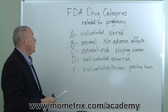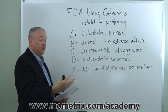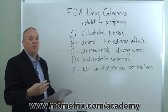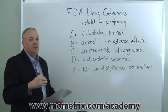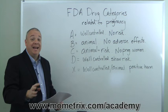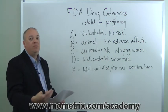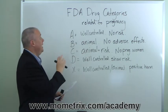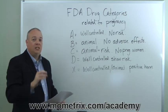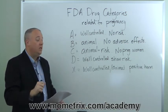We'll begin with Category A. These are drugs that have well-controlled studies on pregnant women, and those studies show no risk — no possible elevation of risk — during any trimester of pregnancy. There is no harm to the unborn baby and no harm to the mother. Category A drugs have well-controlled studies on pregnant women indicating no elevated risk to the mother or to the unborn child.